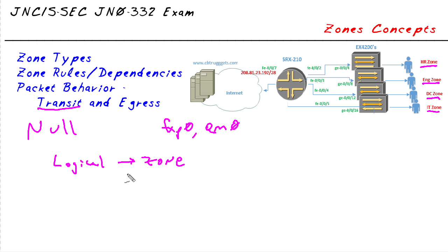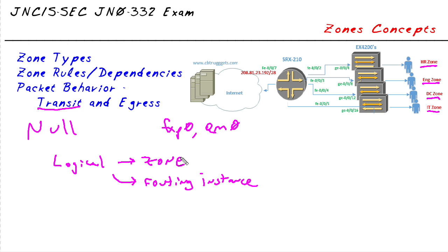You can't assign a logical interface to more than one zone. You can also assign a logical interface into a routing instance, but you cannot assign the same logical interface into more than one routing instance. It's either going to be in one or the other — I can't have a single interface be in HR and in engineering. I can set up access controls that allow similar features between them, but I can't have one interface belong to multiple zones.